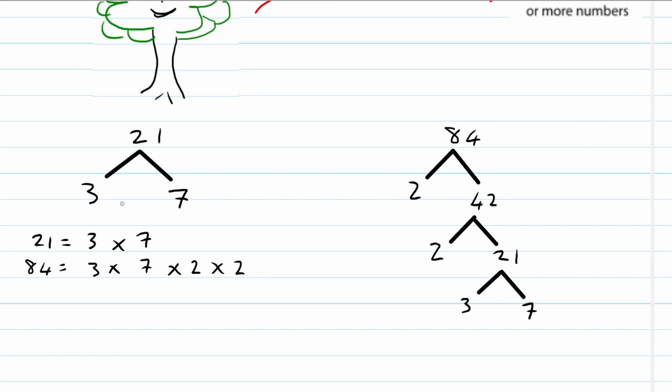And now we look at which numbers are the same for both 21 and 84. And you will see here, 3 is common and 7 is common.